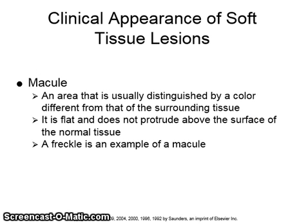The next term is macule. A macule is an area that is usually distinguished by a color different from that of the surrounding tissue. It is flat and does not protrude above the surface of the normal tissue. A freckle is an example of a macule.